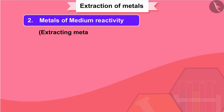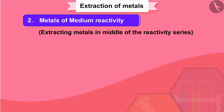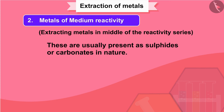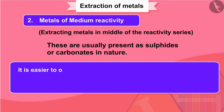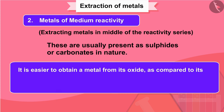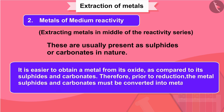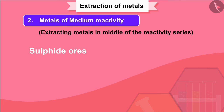Extracting metals in the middle of the reactivity series: metals such as iron, zinc, lead, and copper are moderately reactive. These are usually present as sulfides or carbonates in nature. It is easier to obtain a metal from its oxide as compared to its sulfides and carbonates. Therefore, prior to reduction, the metal sulfides and carbonates must be converted into metal oxides.